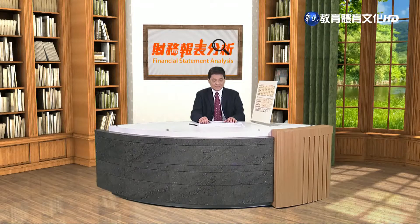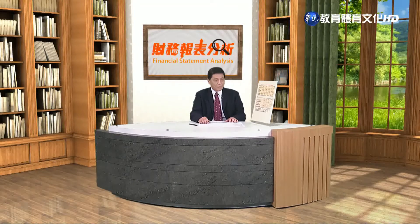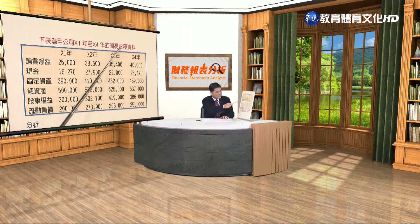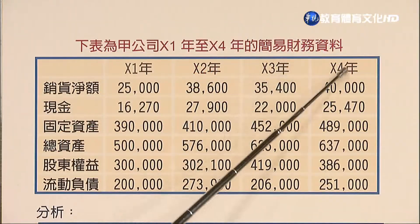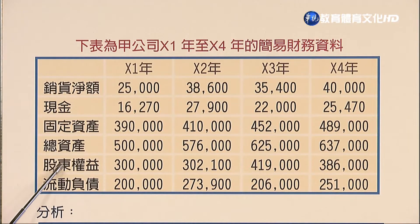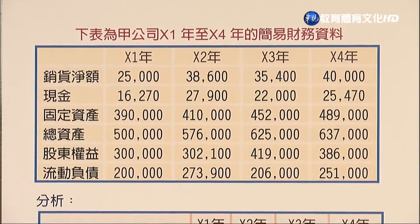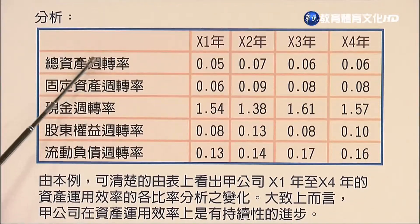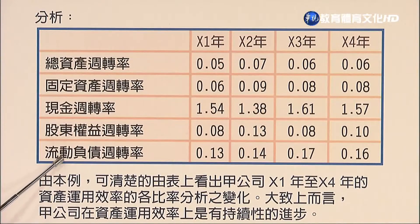最後介紹流動負債周轉率。由於流動負債代表企業需要很快加以償還的負債，最好是企業的銷貨收入能夠支應這些短期需要支付的支出。探討銷貨金額與流動負債之間的周轉率，對於償債能力有很大的幫助。介紹完以上七種分析方法後，舉假設公司一到四年的財務資料為例，包括銷貨金額、現金、固定資產、總資產、股東權益與流動負債等項目進行整體說明。